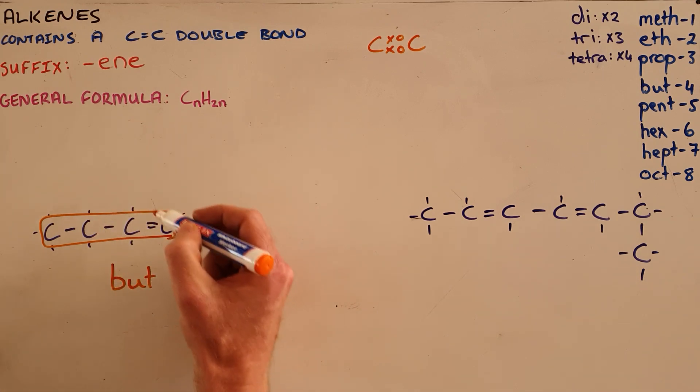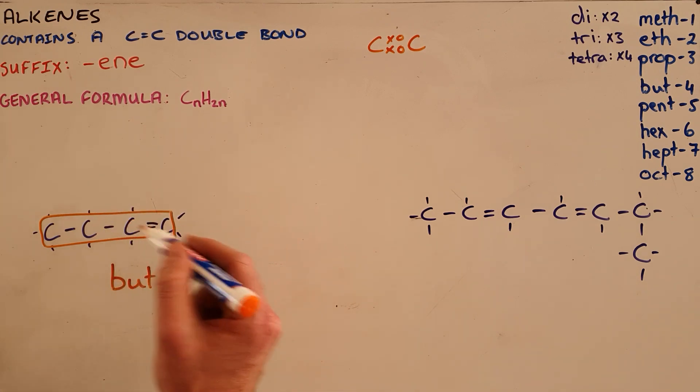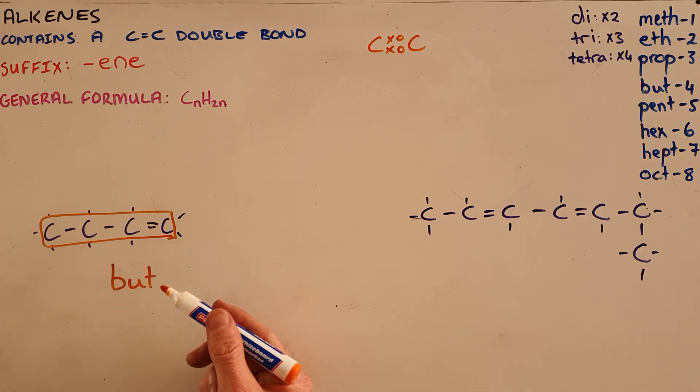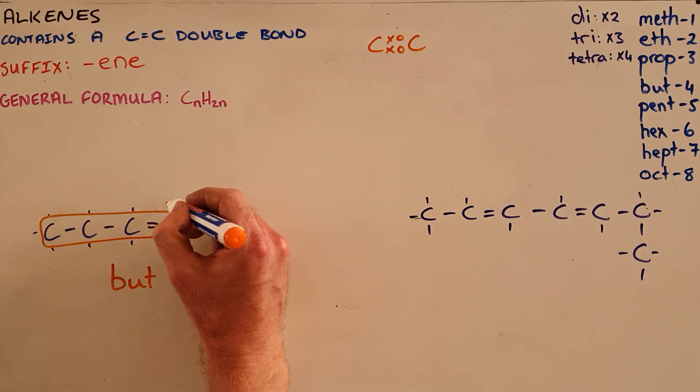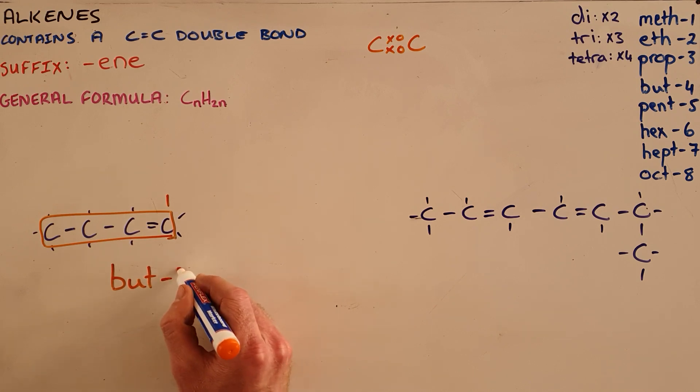We always number so that the double bond or functional group has the smallest number possible, which means this would be carbon number one, and we would call this but-1-ene.